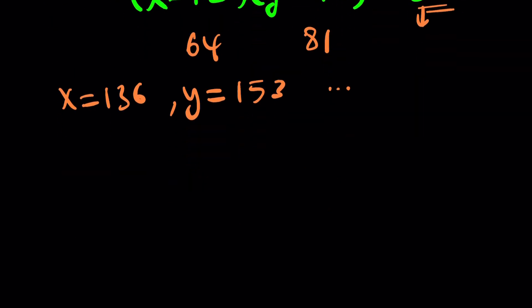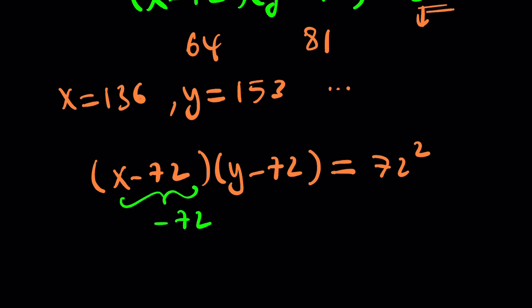And for the negative numbers, let me just show you one. You want to get 72 squared, but you want to use negative factors. And that can be done because negative numbers times negative number is positive. So this can be negative 72, and this can be negative 72, and you still get 72 squared. But that means x and y are both zero.